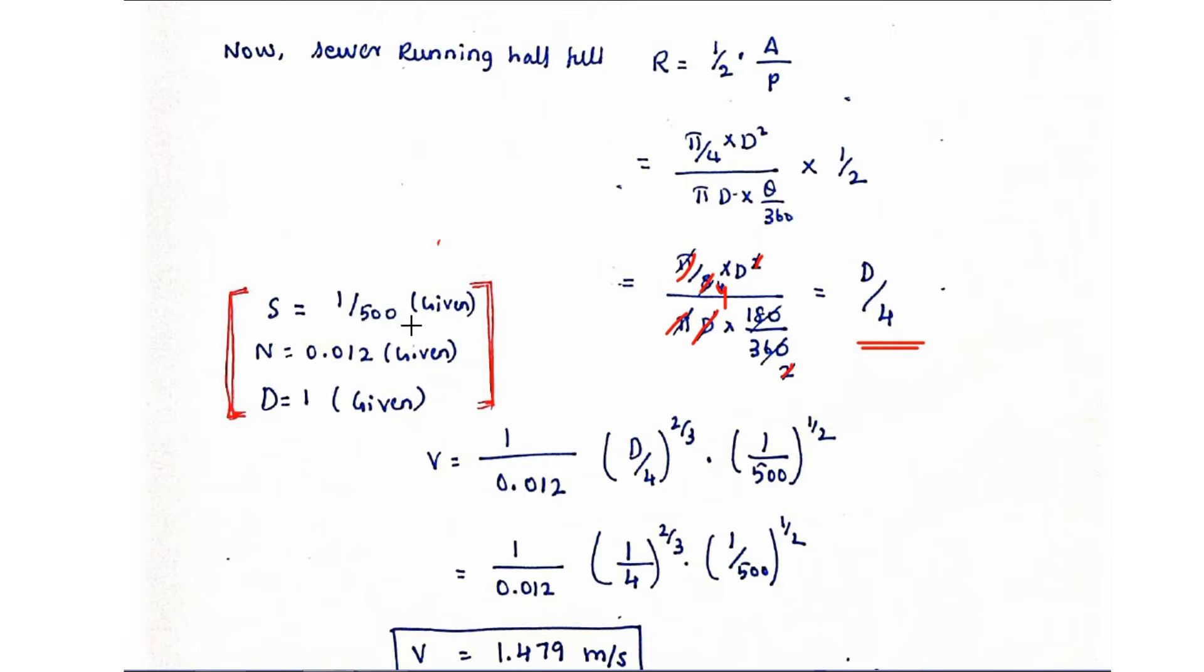The given value s equal to 1 in 500, n value 0.012, and diameter is given. We are going to substitute all the values. So v equals 1 by 0.012, the n value, and r value d by 4 into 2 divided by 3 into slope s equal to 1 divided by 500 whole power 1 by 2.